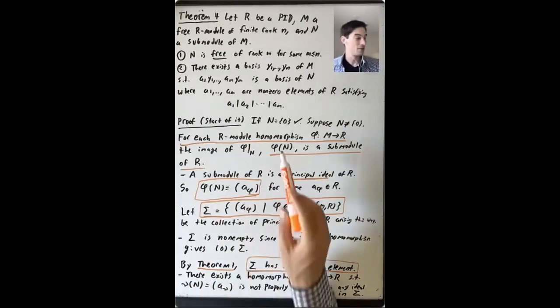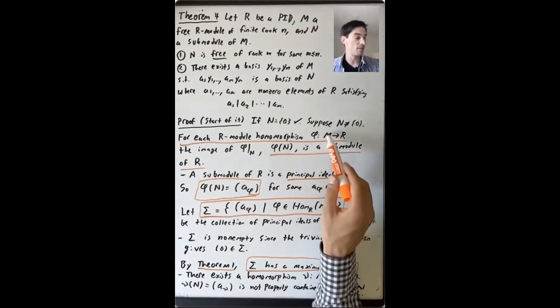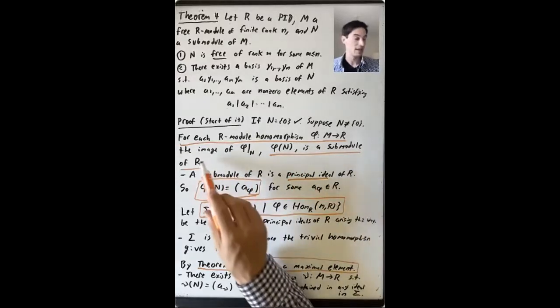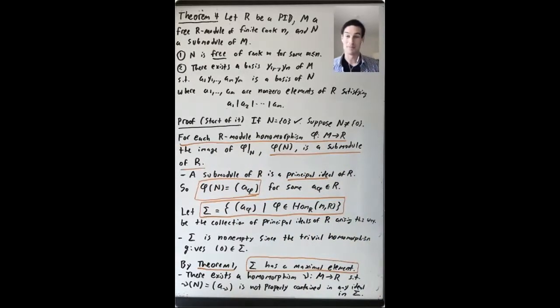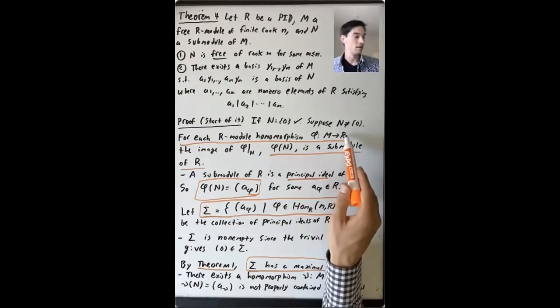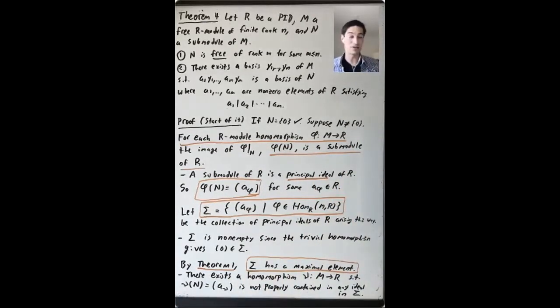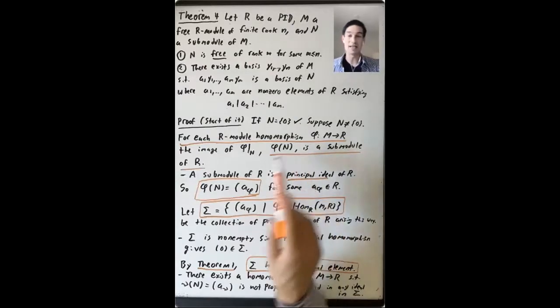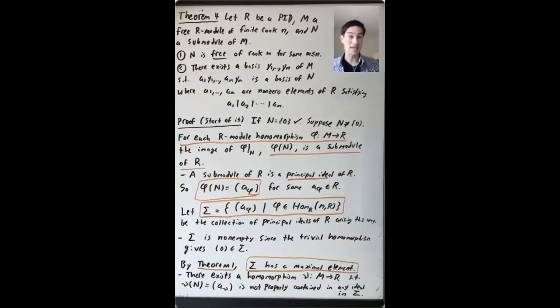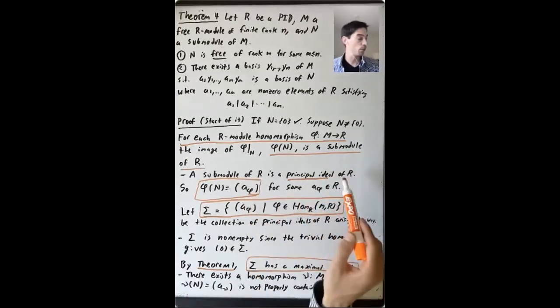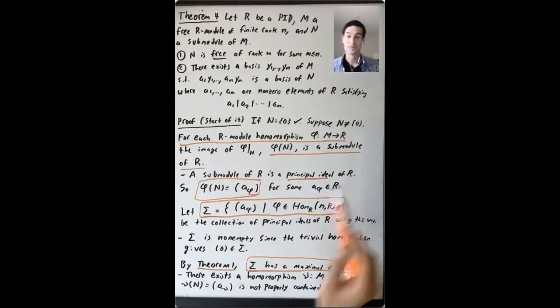So for each R module homomorphism from M to R, you get this image is a submodule of R. What is a submodule of R? Well, R you think of as a left module over itself. Submodules are ideals. And if R is a PID, then a submodule of R is a principal ideal of R.